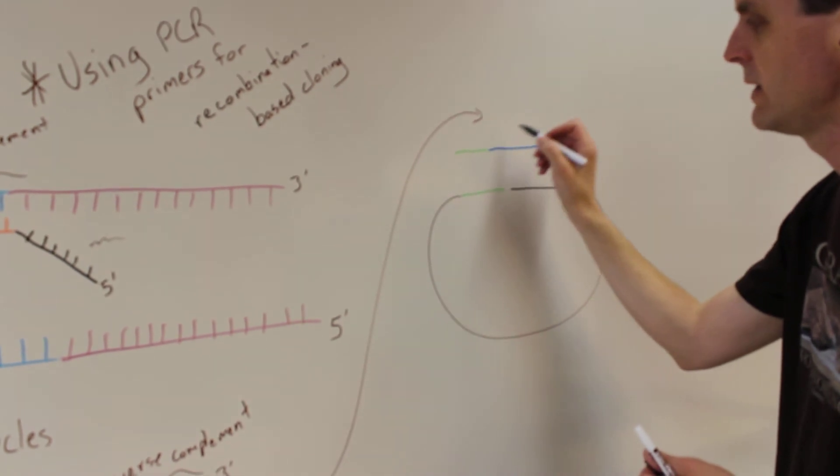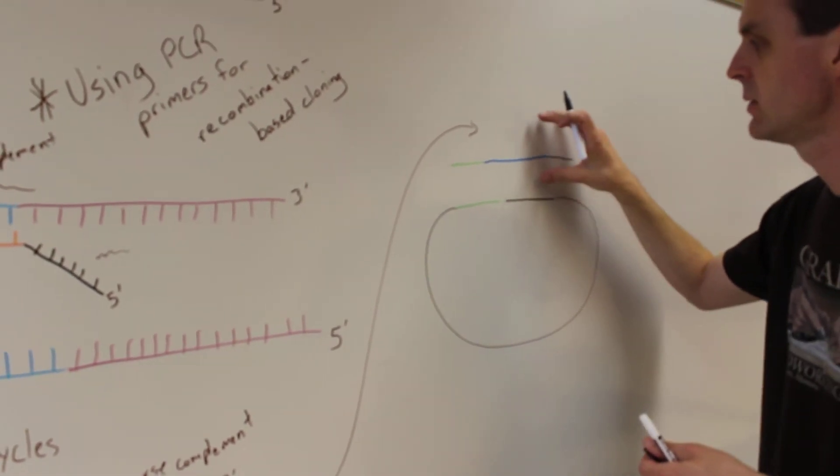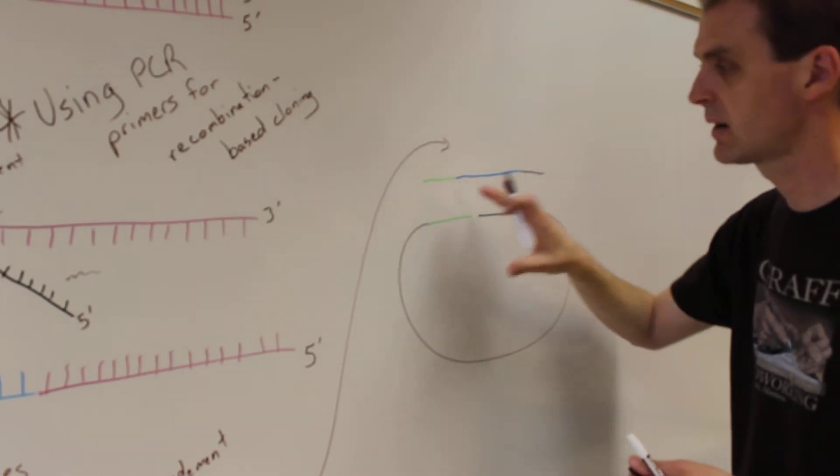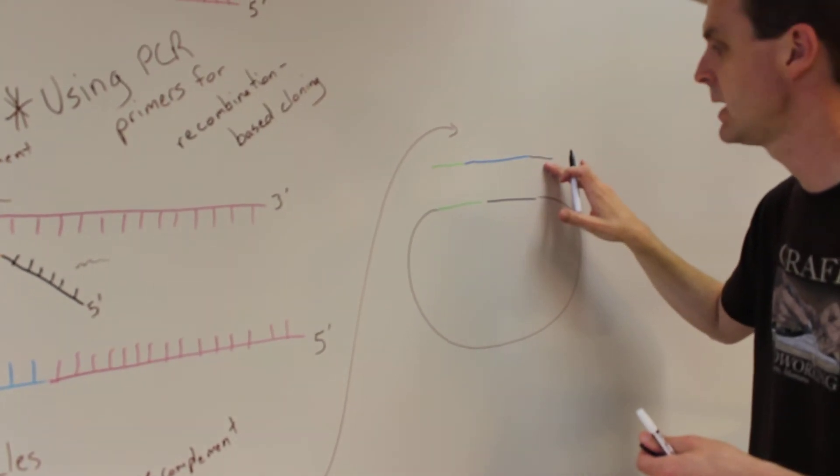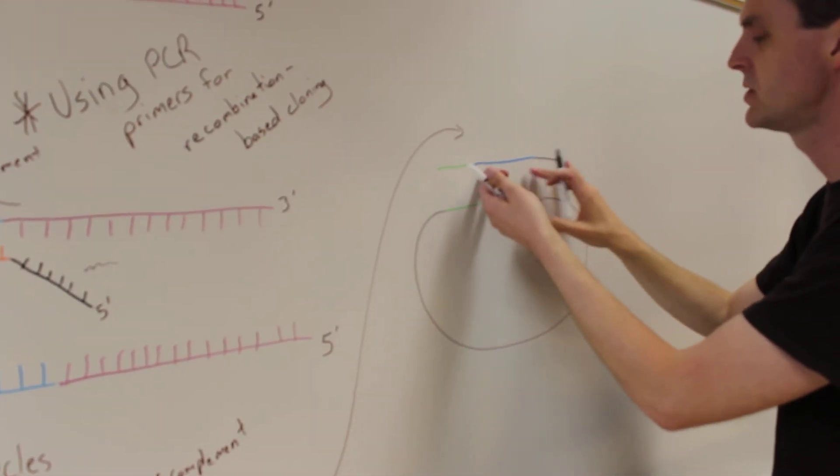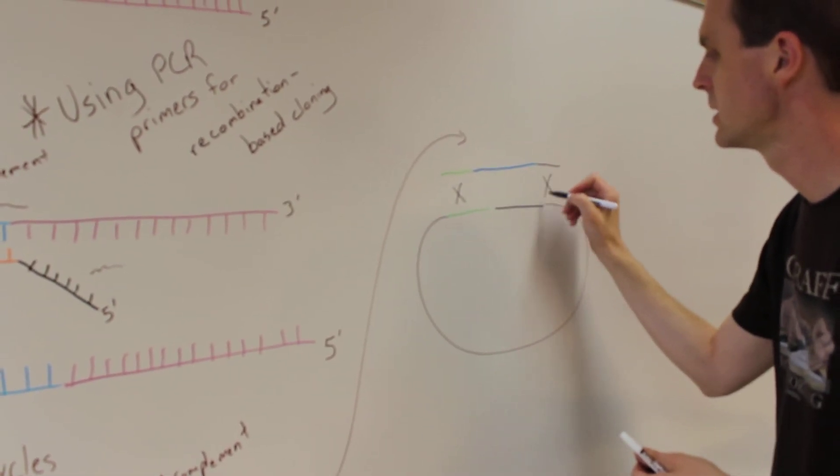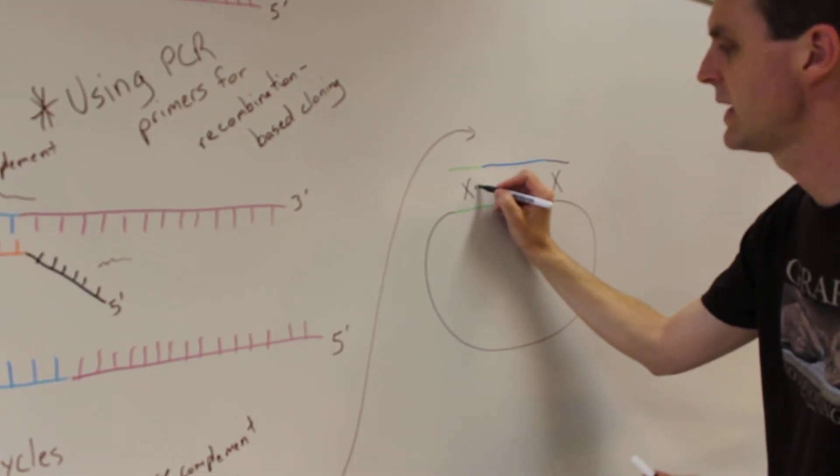So if you take this digested plasmid, mix it with your PCR product that has the custom sequence at the 5' end, at this end and this end, upstream and downstream of your gene, you can get recombination, which is just shown here with X's.